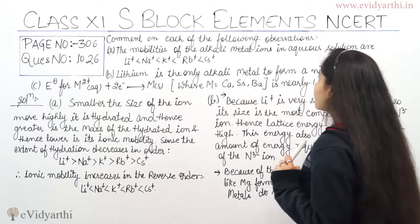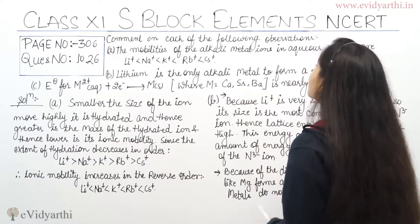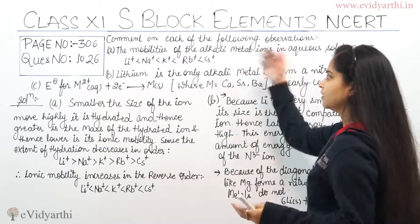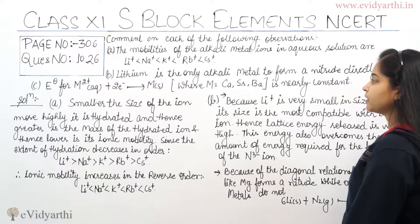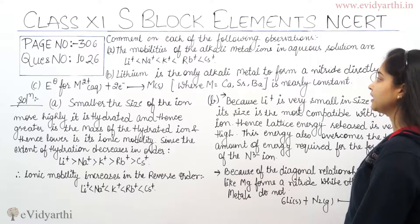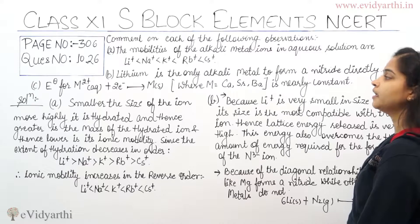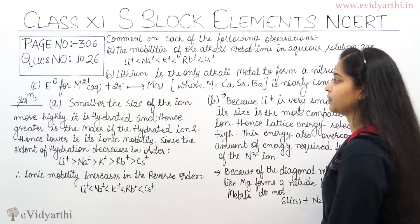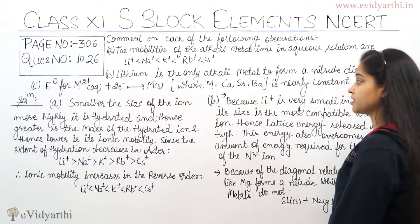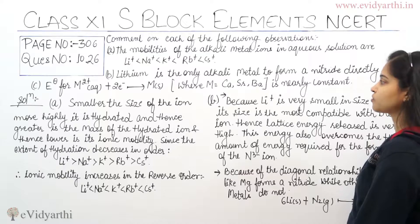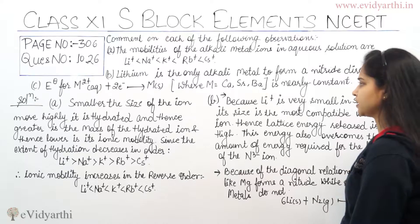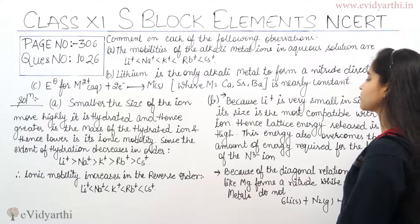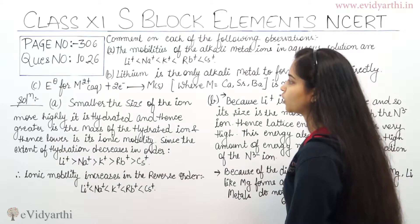The question says: comment on each of the following observations. Number one, the mobilities of the alkali metal ions in aqueous solution follow a specific trend. Number two, lithium is the only alkali metal to form a nitride directly. Number three, the standard electrode potential for M²⁺(aq) + 2e⁻ → M(s), where M equals calcium, strontium, or barium, is nearly constant.